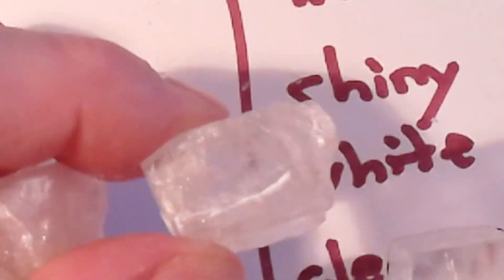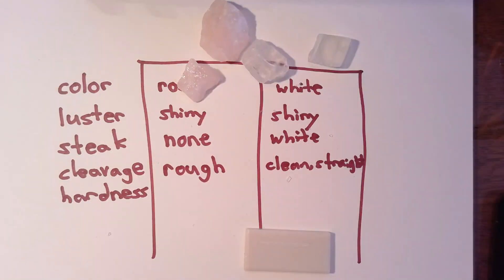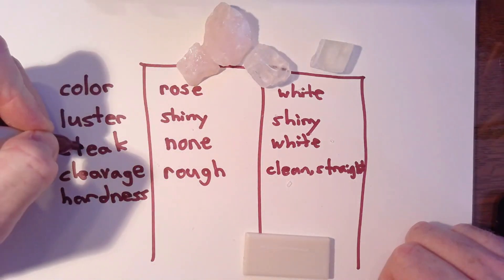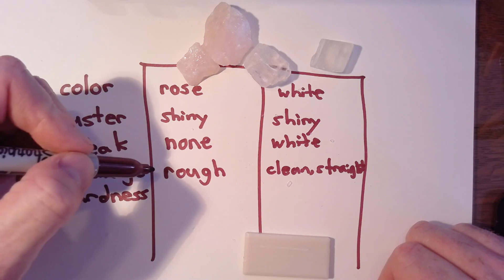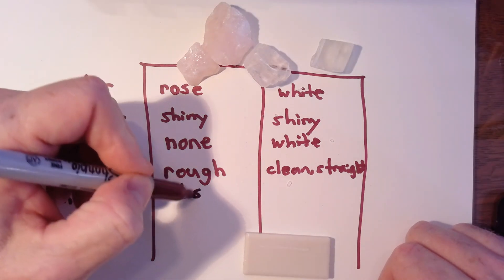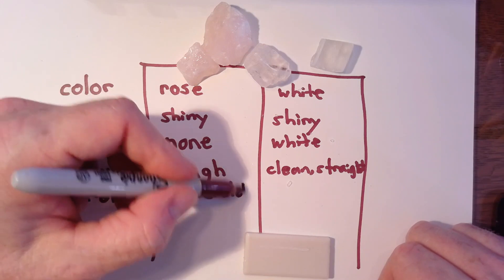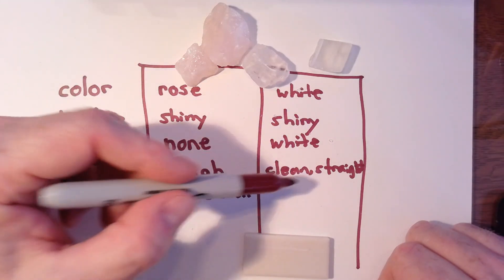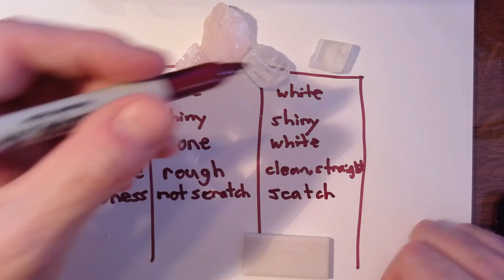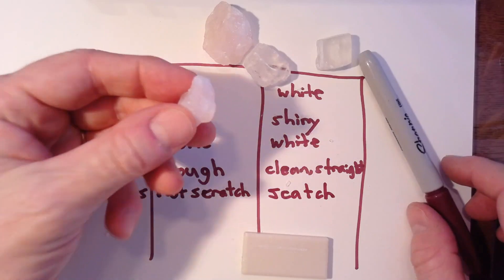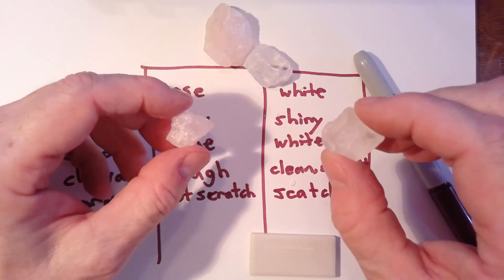Look at that — scratched it right up. That's a deep scratch. So compared to each other: the rose shiny piece, which does not streak and has a rough cleavage, does not get scratched. When scratched by the white shiny piece, which has a white streak and a clean straight cleavage, that one does get scratched. So the rose mineral is harder than the white shiny piece — this is a softer mineral and this is a harder mineral.